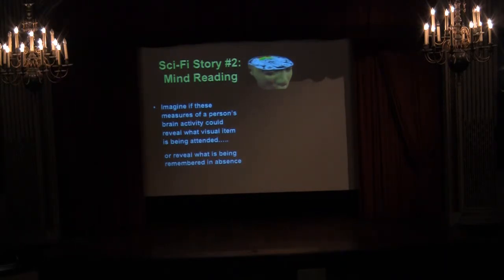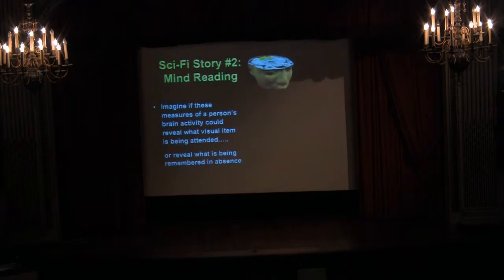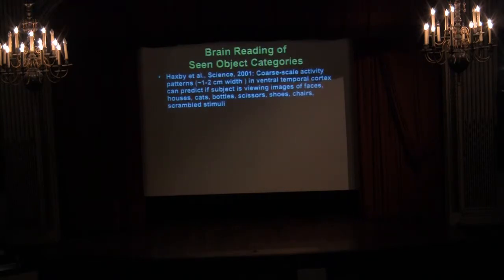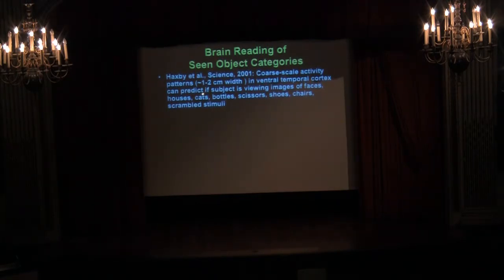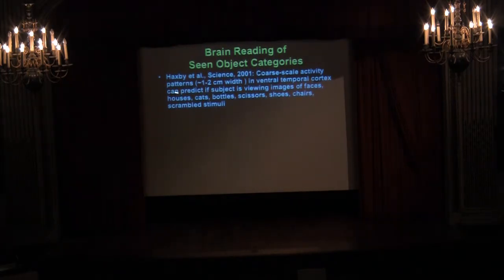Stepping back to science fiction story number one — brain reading — it turns out this experiment has been done. A striking example was done by Jim Haxby and colleagues, who measured coarse-scale activity patterns in the ventral temporal cortex. These regions respond well to various types of objects, and they wanted to know whether it would be possible to predict what category of object the person was looking at. They showed various categories: faces, houses, cats, bottles, scissors, shoes, and so forth.